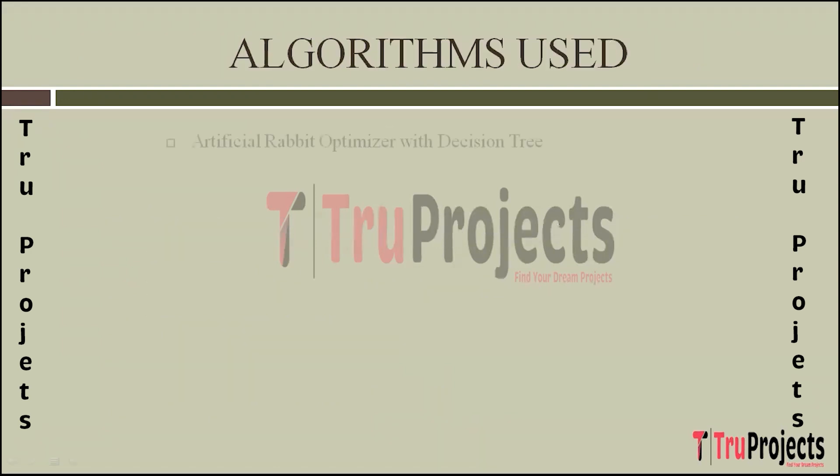Now we'll understand the algorithms used. The first algorithm is Artificial Rabbits Optimizer with Decision Tree (ARO-DT). This algorithm combines ARO with the Decision Tree model. ARO is inspired by the behavior of rabbits in finding the optimal path, applying optimization techniques to enhance feature selection and model parameters. The Decision Tree algorithm builds a tree-like structure of decisions based on features, suitable for classification tasks like heart disease prediction. ARO's optimization capabilities improve the Decision Tree's accuracy by fine-tuning its parameters.